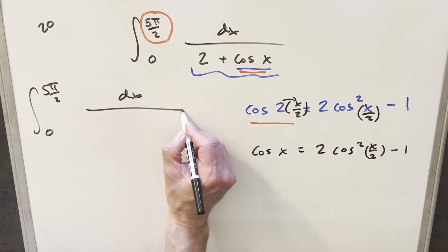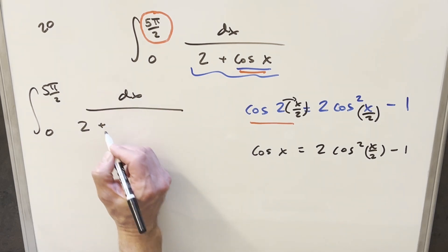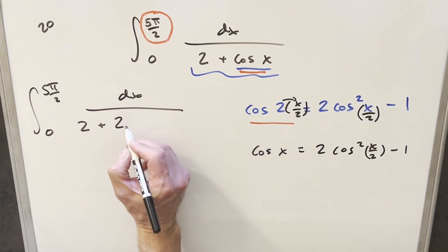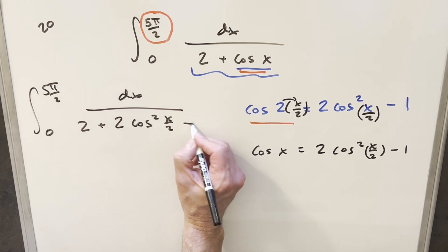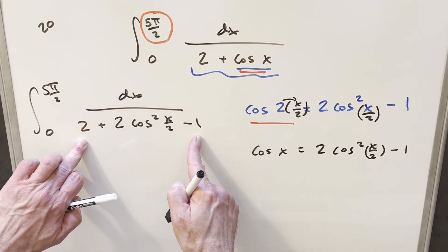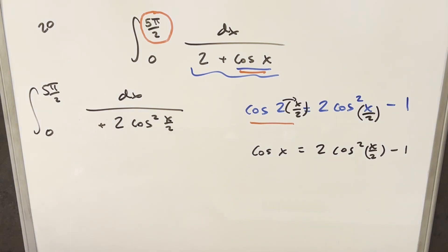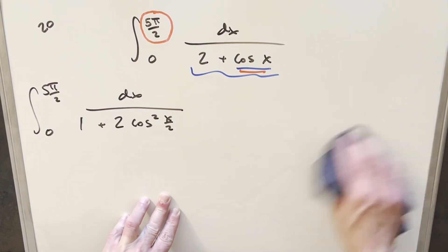So when we do this, we have our dx, then we'll have 2 plus this thing. This is going to be 2 cosine squared x over 2 minus 1. But then let's just combine the 2 minus 1 and rewrite this. I'll just rewrite this over here as a 1. And now at this point, this doesn't really seem any better than what we started with.